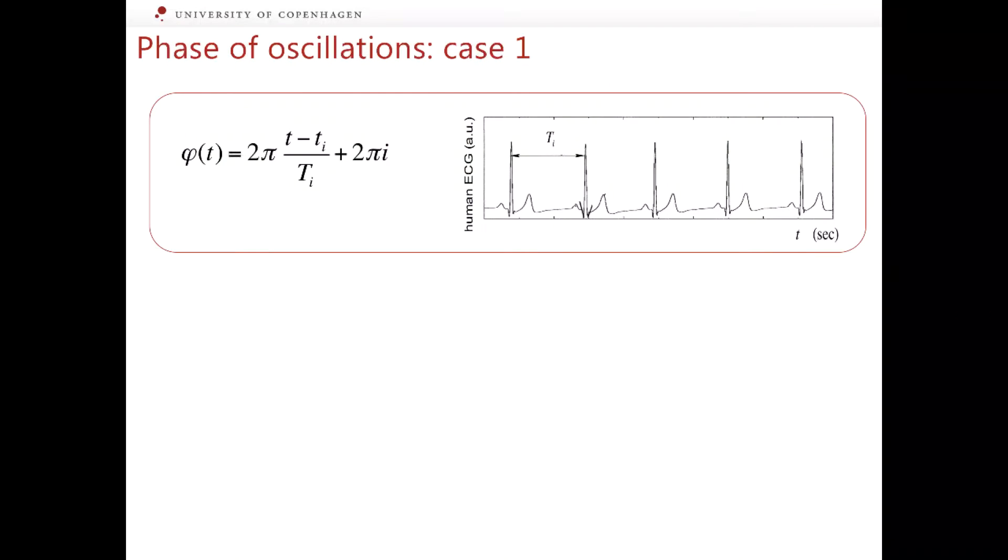Consider a biological example, a human electrocardiogram, which shows the electrical activity of a human heart. Sharp high peaks here, called R peaks, indicate the moment of a new oscillatory cycle, but the time intervals between the cycles vary due to the natural heart rate variability.